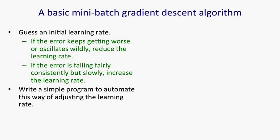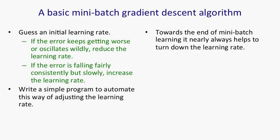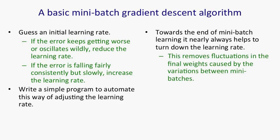Once you've got that working, you can then write a simple program to automate that way of adjusting the learning rate. One thing that nearly always helps is towards the end of learning with mini-batches, it helps to turn down the learning rate. That's because you're going to get fluctuations in the weights caused by the fluctuations in the gradients that come from the mini-batches.